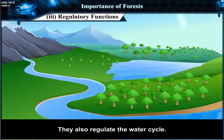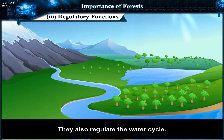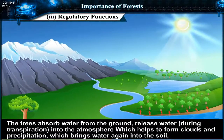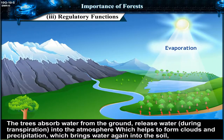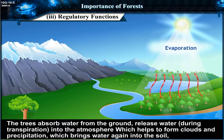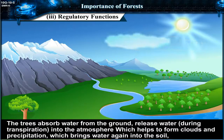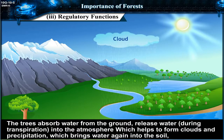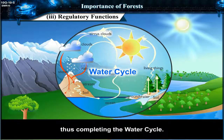Trees also regulate the water cycle. The trees absorb water from the ground and release water during transpiration into the atmosphere, which helps to form clouds and precipitation, which brings water again into the soil, thus completing the water cycle.